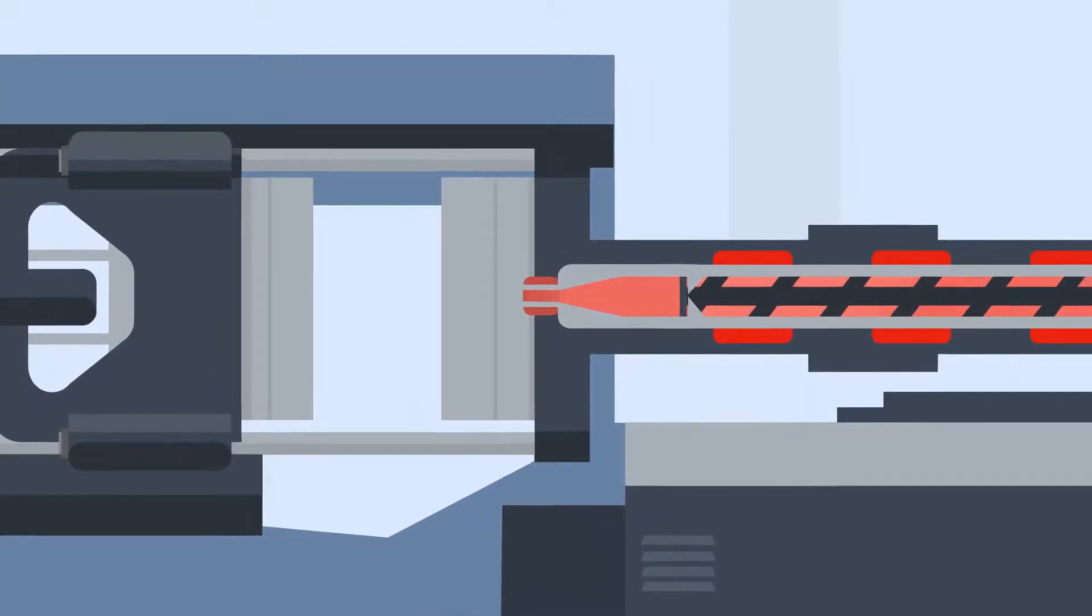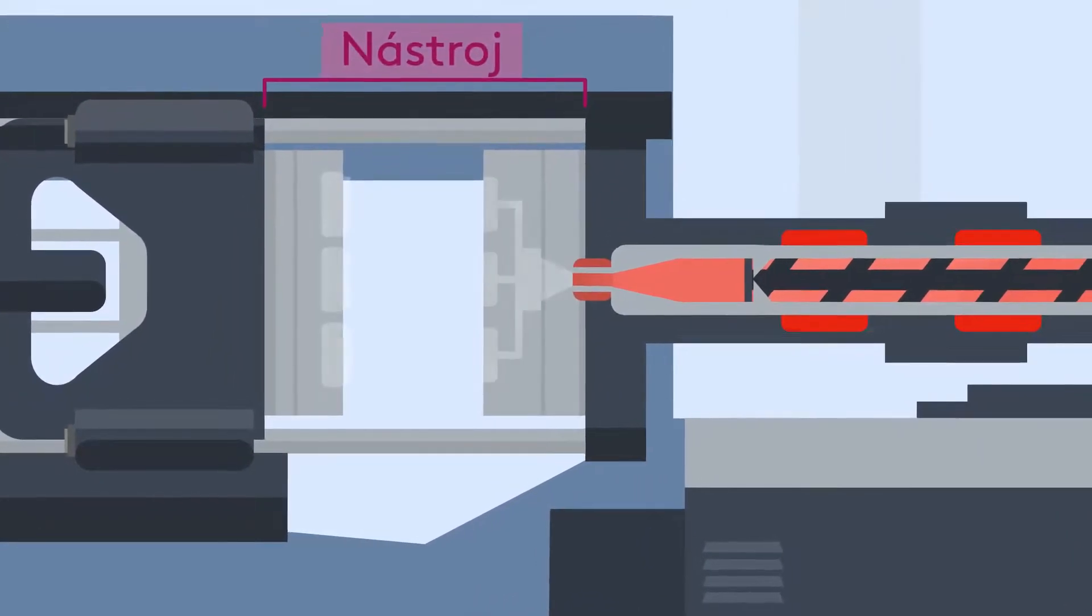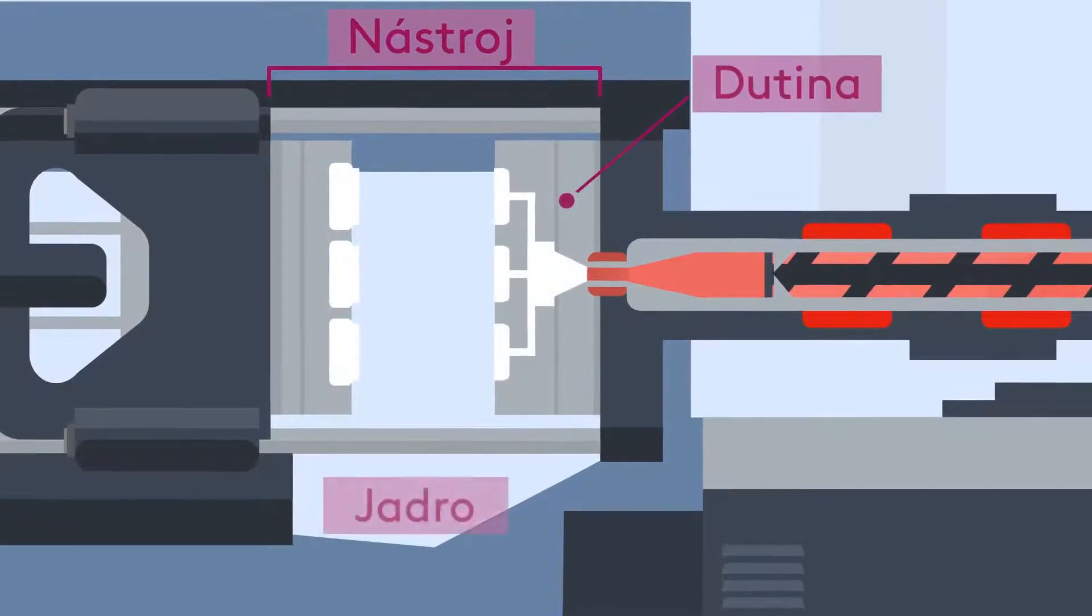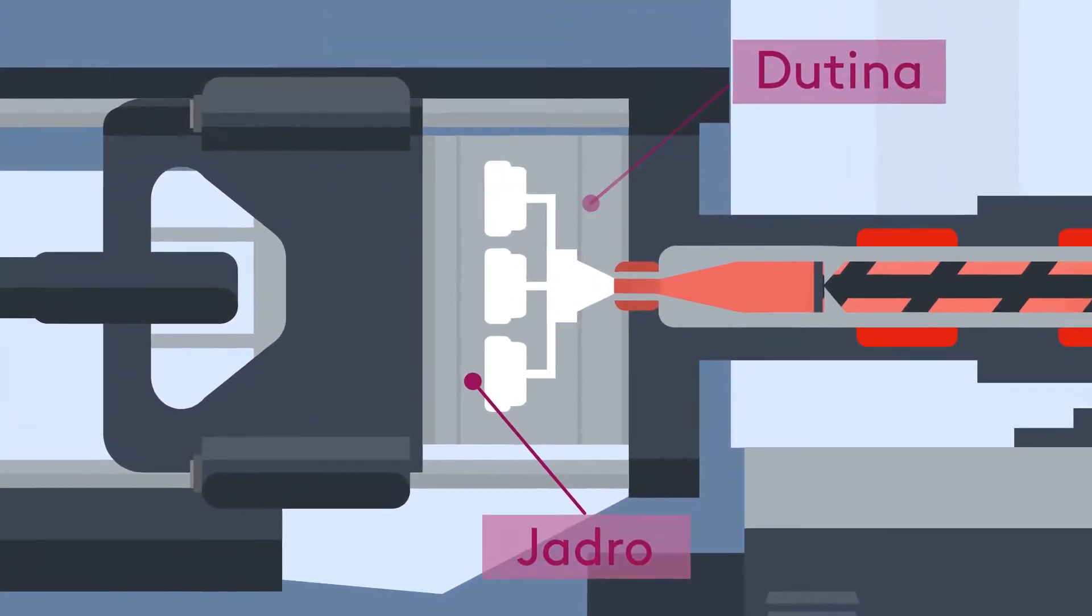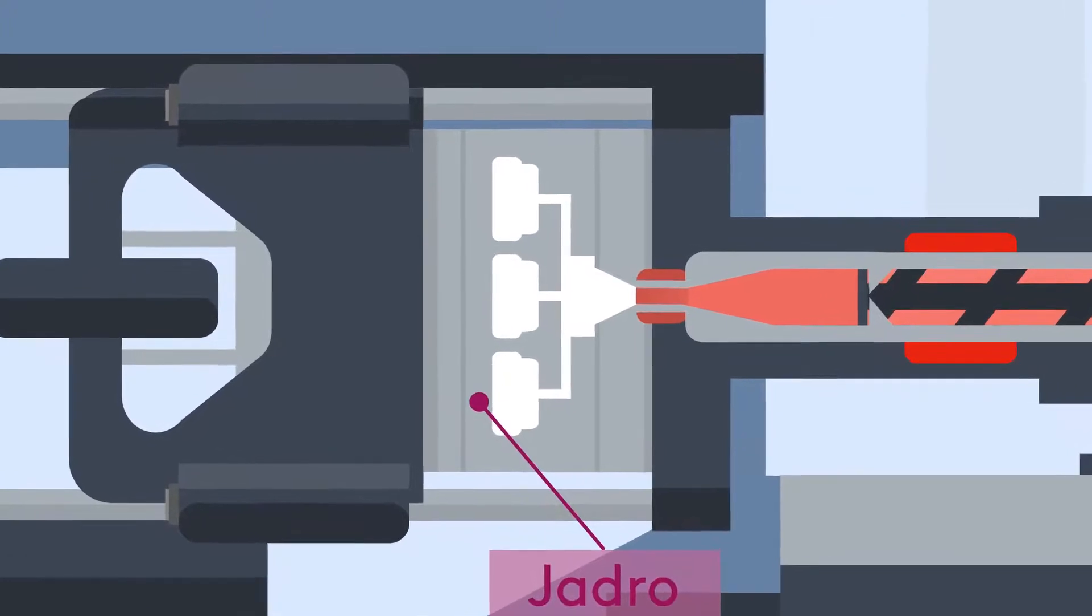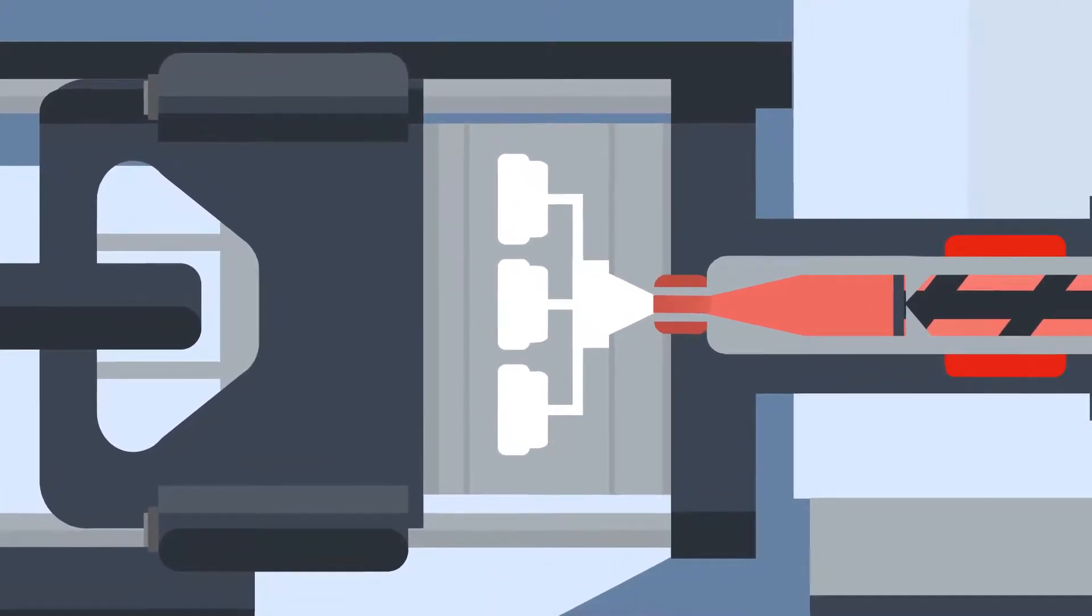Before the molten plastic is injected, the tool, which is usually made up of a fixed half called the cavity, and a moving half called the core, closes. When closed, the clamp will apply pressure to the tool, ready for the injection of the plastic.